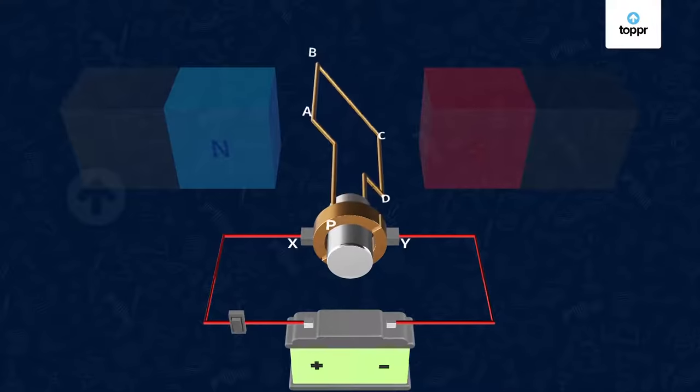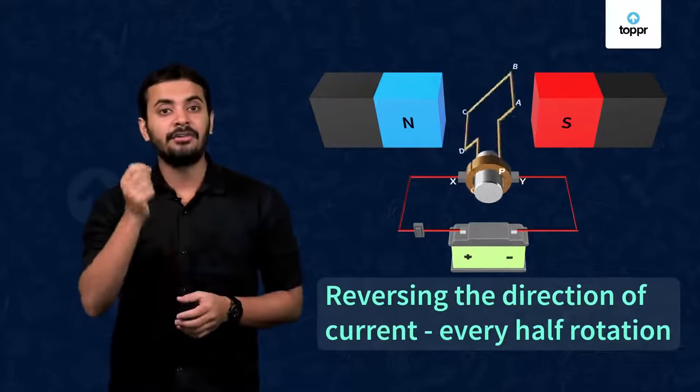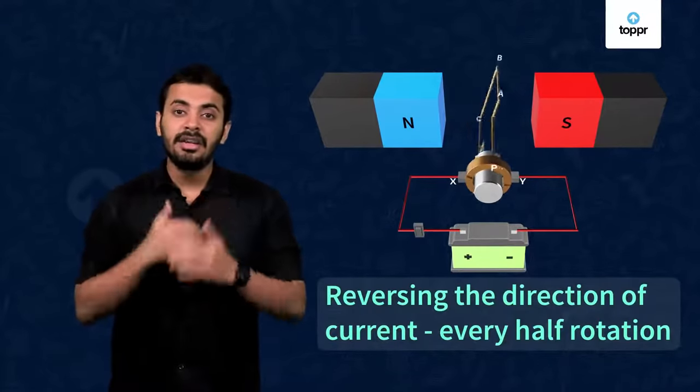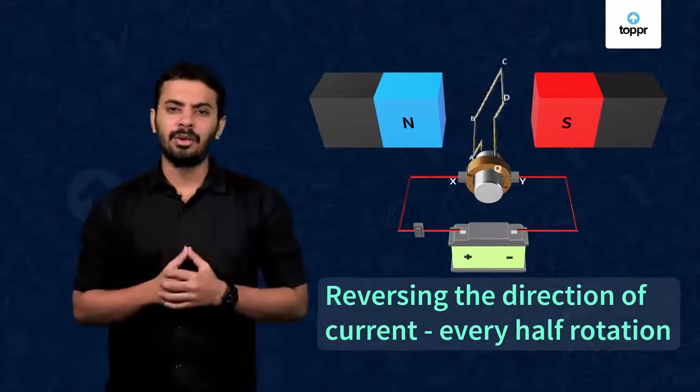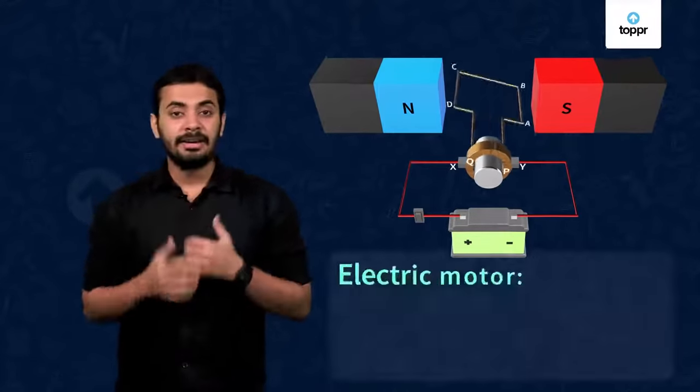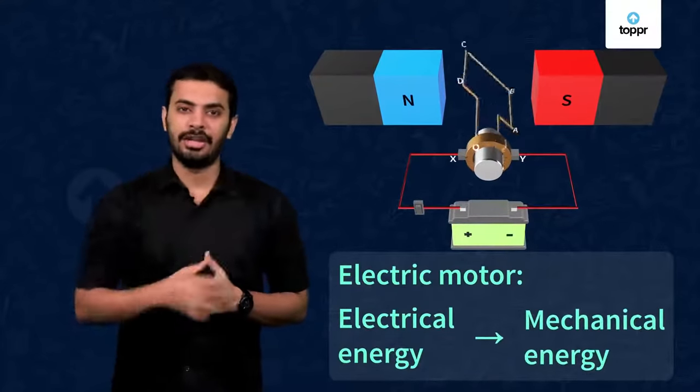And with this, it completes its full rotation. The direction of current is reversed at every half rotation, giving rise to a continuous rotation of coil and to the axle. That's all about working of an electric motor. It converts the electric energy of this battery to the mechanical energy of this coil.